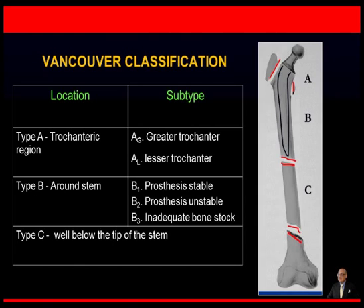This brings me to the Vancouver classification, used globally for these fractures. It is based on the location of the fracture, whether the implant is stable or unstable, and the available bone stock. Type A is a fracture in the trochanteric region — AG in the greater trochanter and AL in the lesser trochanteric region. Type B fractures occur around the stem of the implant: B1 when the prosthesis is stable, B2 when the prosthesis is unstable, and B3 when the prosthesis is unstable and bone stock is also inadequate. Type C is a fracture that occurs well below the tip of the stem.